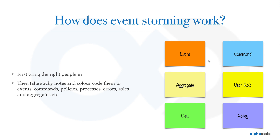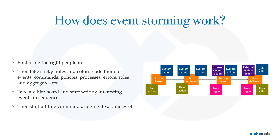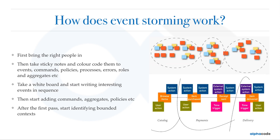After color-coding the sticky notes, take a whiteboard and start writing interesting events in sequence. Since the workshop is called event storming, everything is focused on events. For example: stock order was accepted, stock price was changed, stockholders were notified - or in an e-commerce domain: items were browsed, items were purchased, items were shipped, items were delivered. All of these events are in past tense - an event means something that has already happened. Something that creates that event might be another event or a command. As a next step, you add commands, aggregates, and policies to your events after the first pass.